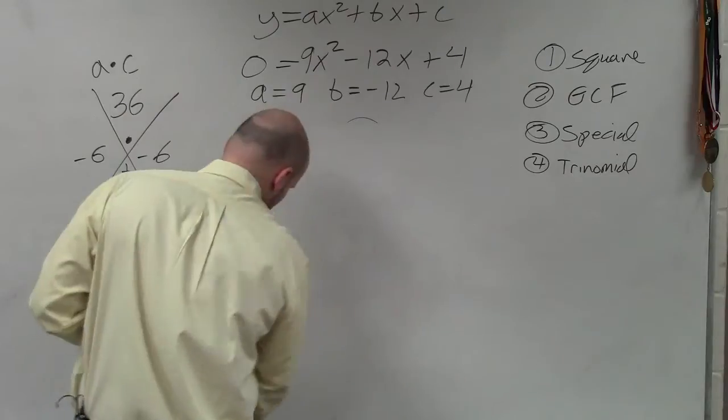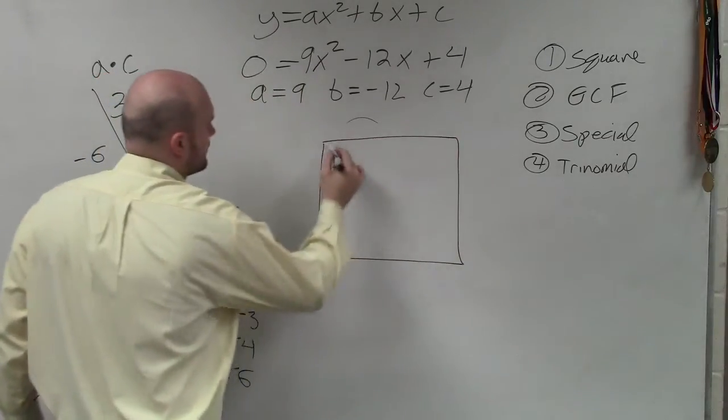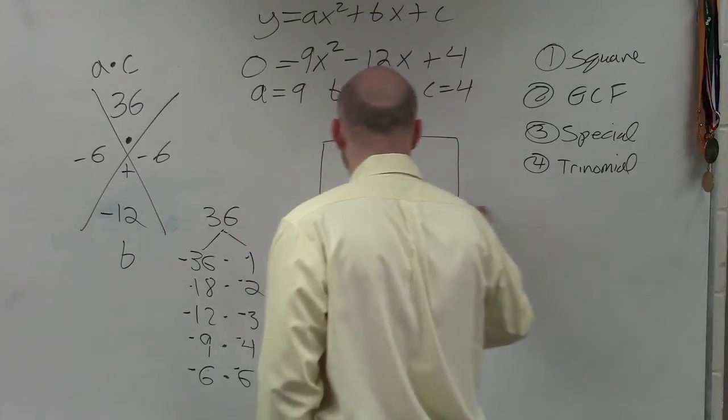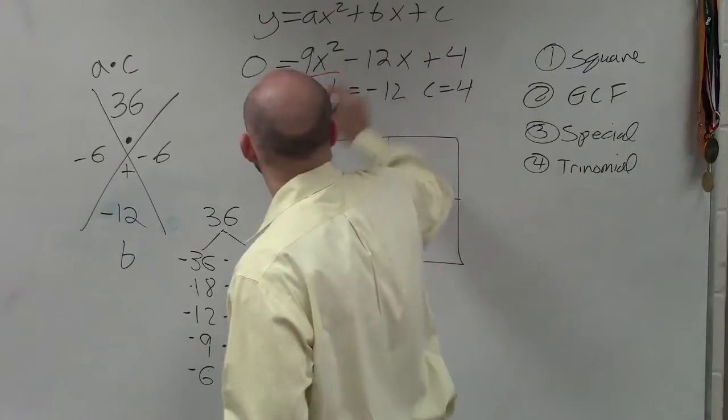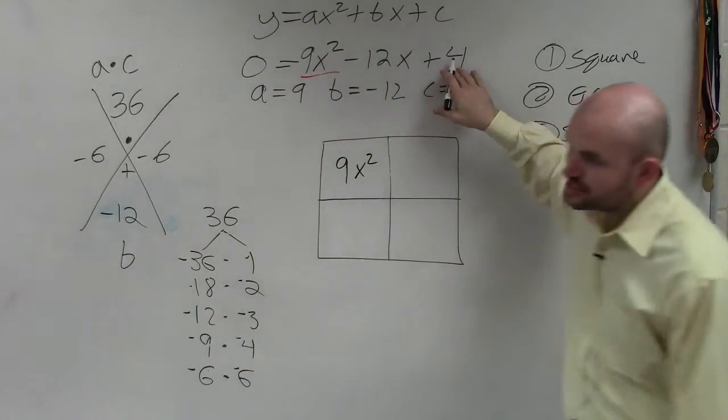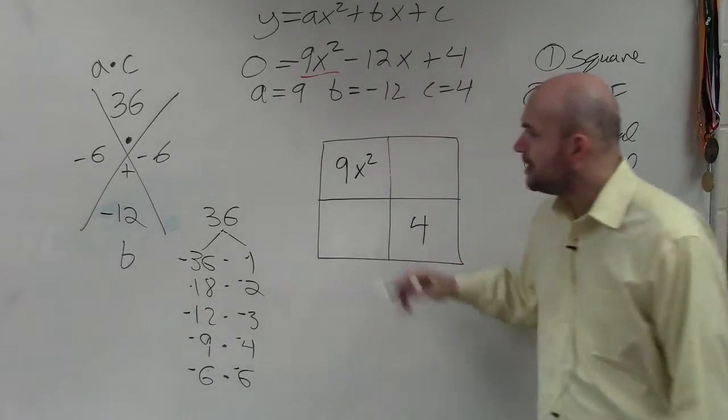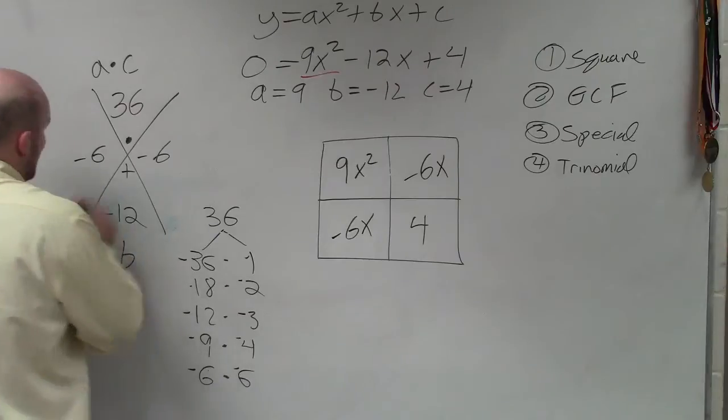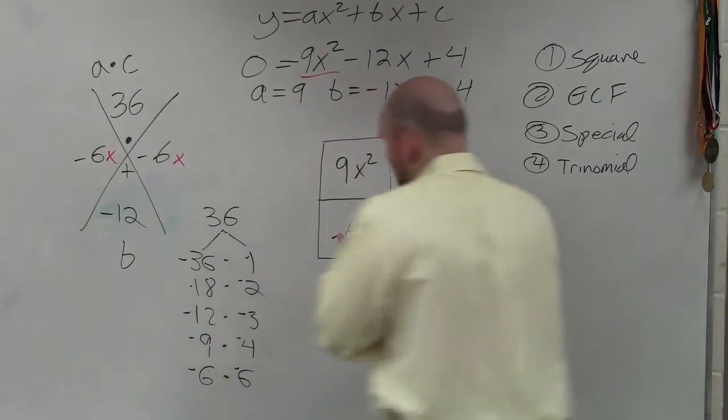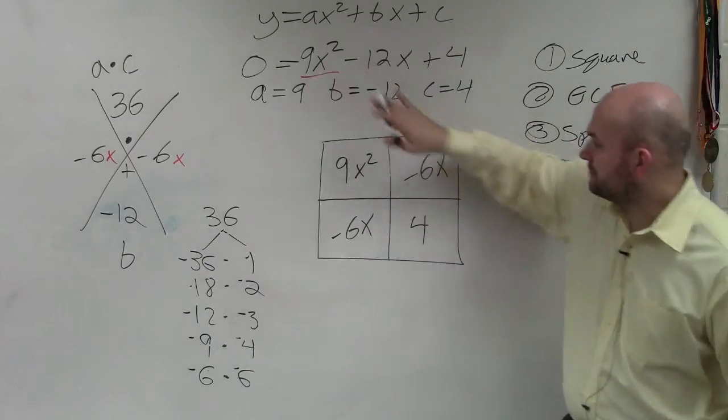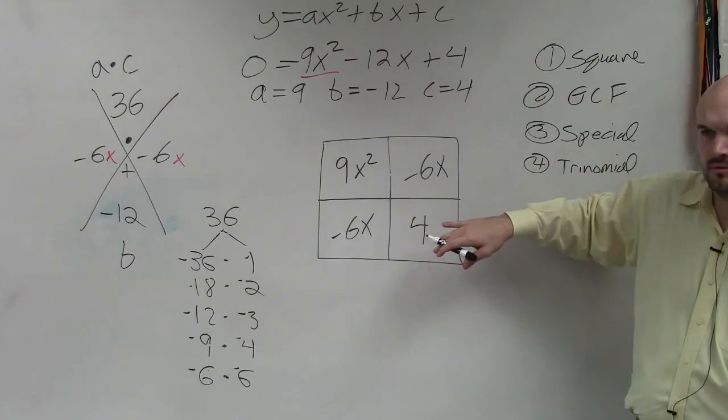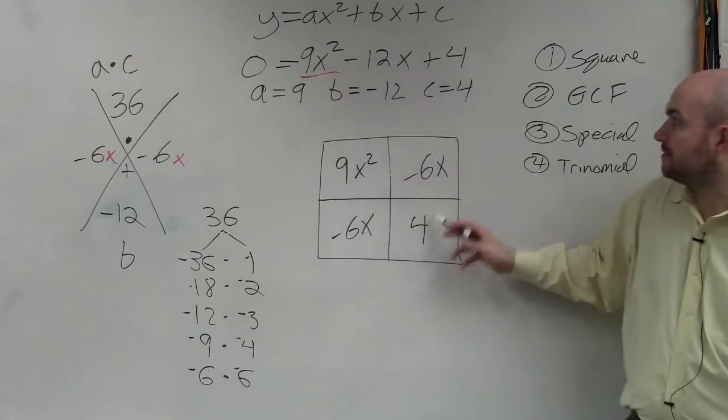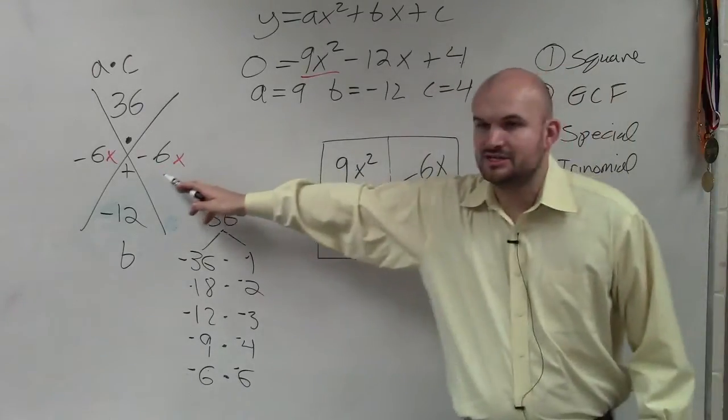So what you're going to do, the first method, is we are going to create a box. And what we're going to do with this box is we're going to create four sections. In the first section, I'm going to put the first term, 9x squared. In the last section, I'm going to put 4. And then down here, I'm going to write negative 6x and negative 6x. So what I have done, basically, is I have kind of added x's to these terms. And I put them in the two missing boxes. Notice how these two come from here.